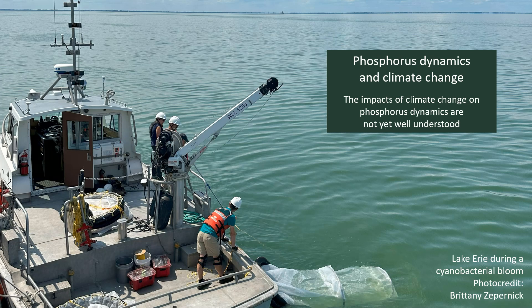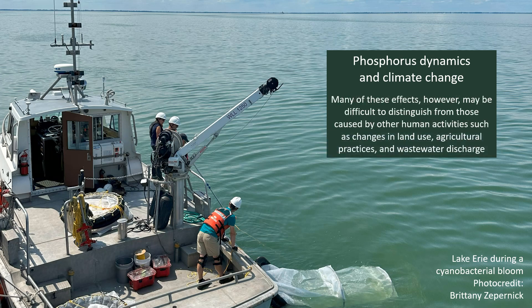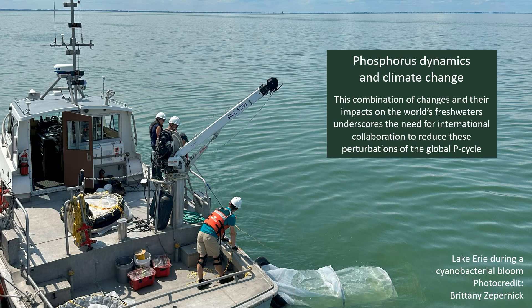The impacts of climate change on phosphorus dynamics are not yet well understood. Climate-related changes — for example in precipitation, storm intensity, floods and droughts — all have the potential to affect phosphorus export rates from catchments and lake phosphorus dynamics. Many of these effects, however, may be difficult to distinguish from those caused by other human activities, such as changes in land use, agricultural practices, and wastewater discharge. This combination of changes and their impacts on the world's fresh waters underscores the need for international collaboration to reduce these perturbations of the global phosphorus cycle.